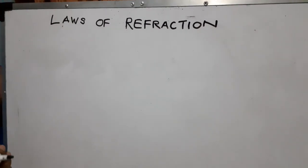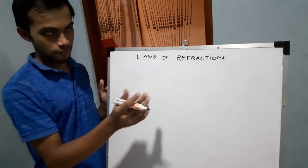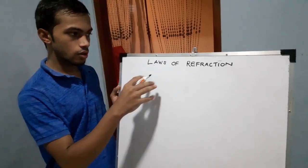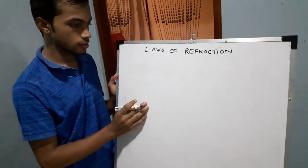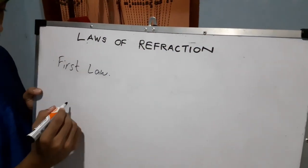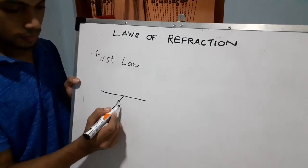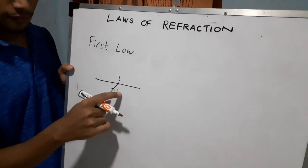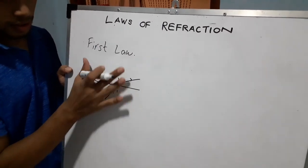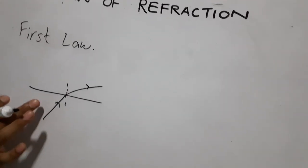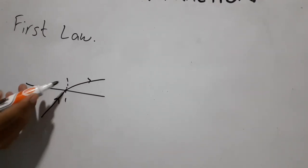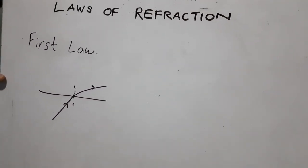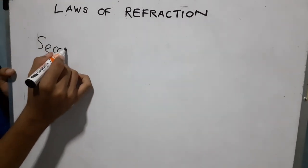Let's move on to the laws of refraction. There are two laws. The first law states that the incident ray, the normal drawn perpendicular to the interface, and the refracted ray all lie on the same plane.